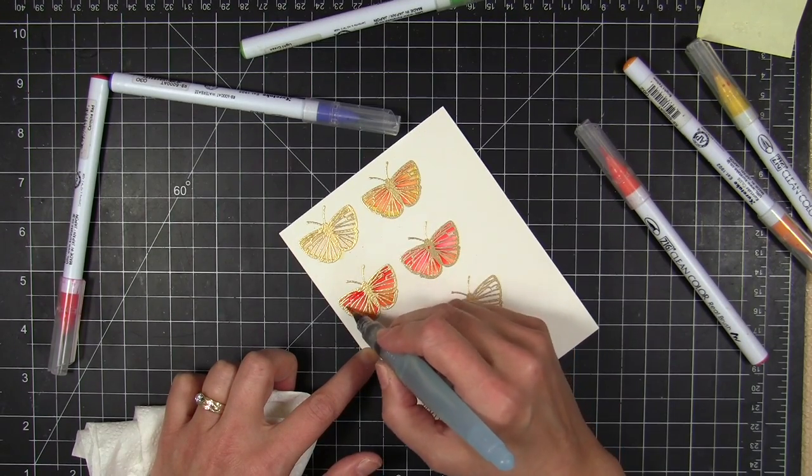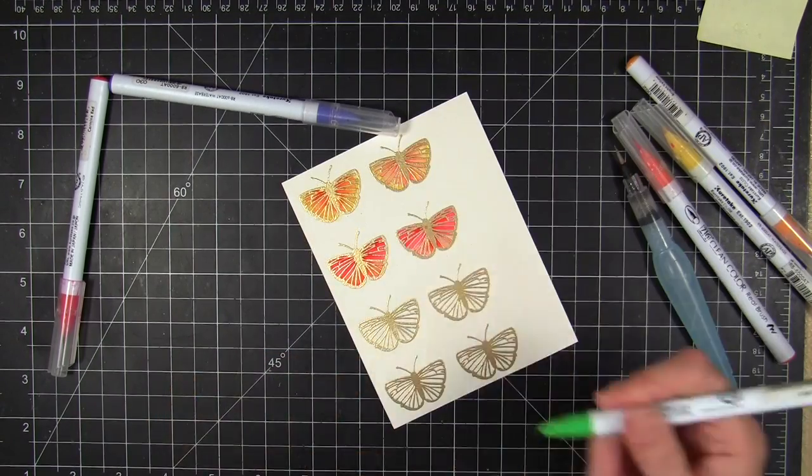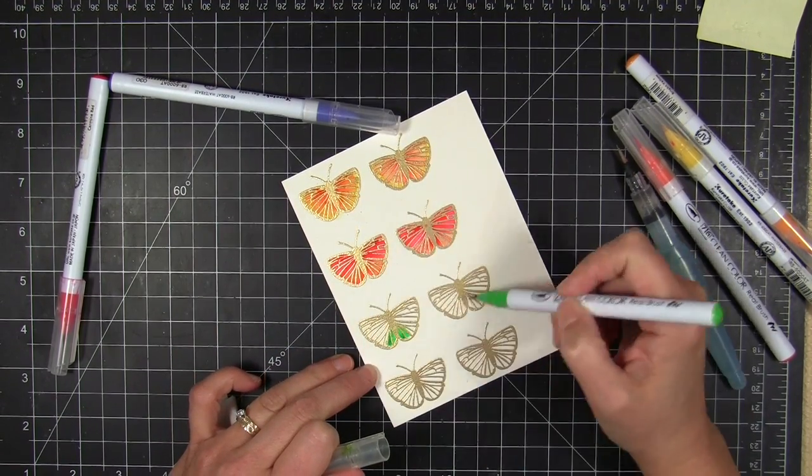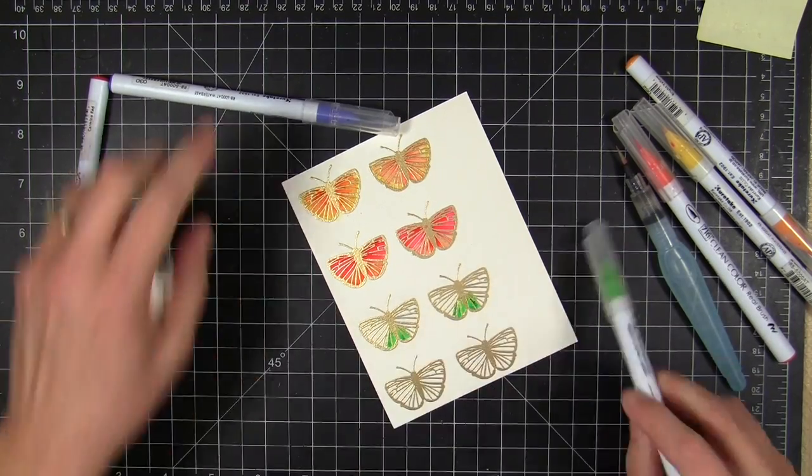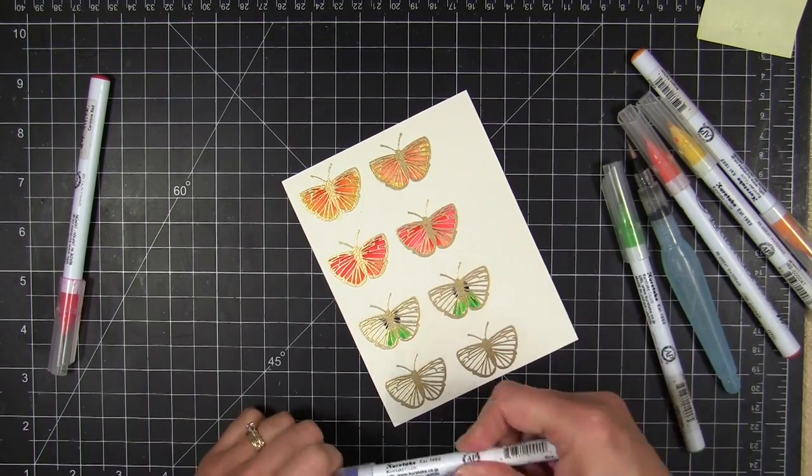This is a water brush that has water in the reservoir or the barrel there. And I'm just gonna spread that color around and blend the colors very quickly. And I have some paper towel there so I can blot the tip if I have too much water on the tip or I get too much color or too much water down on my butterfly.